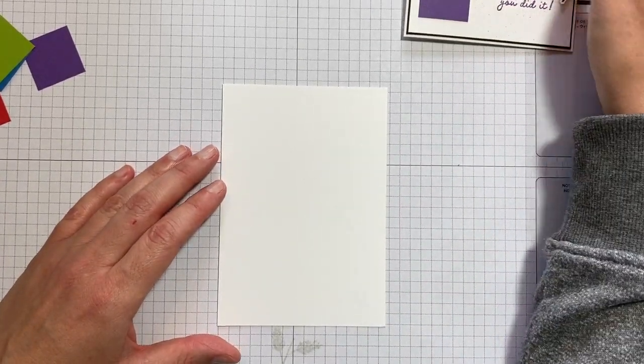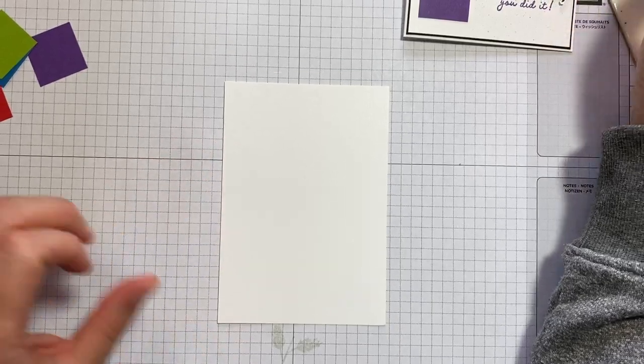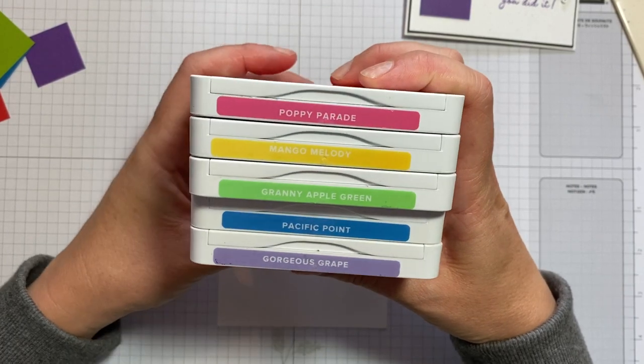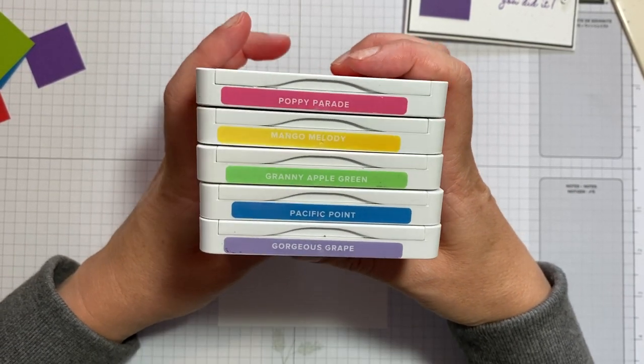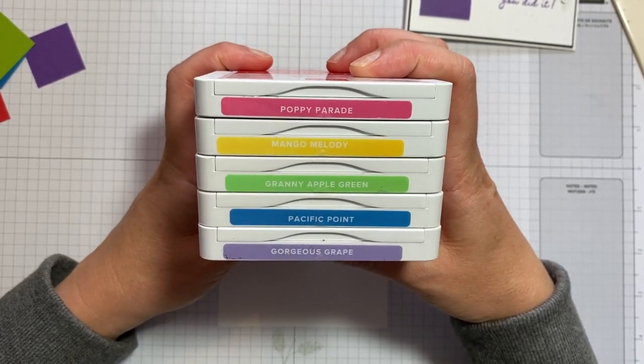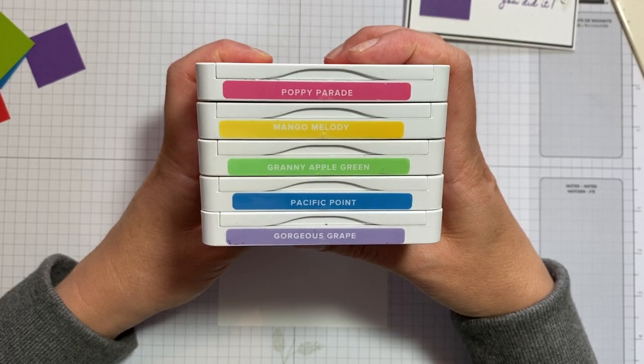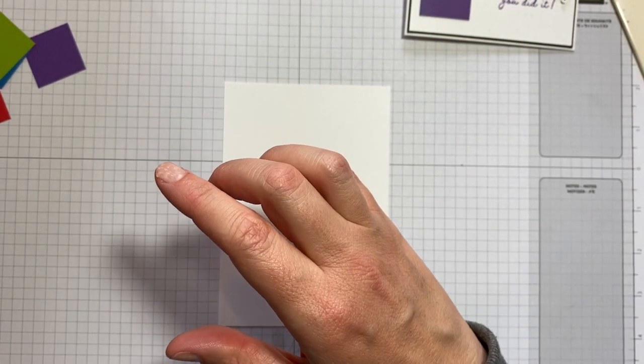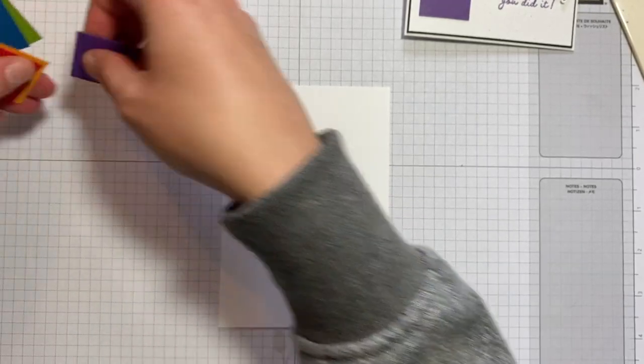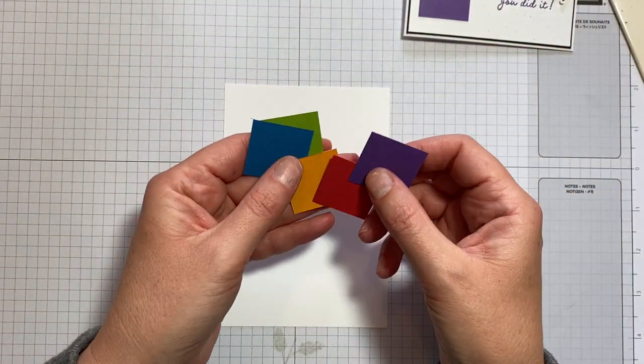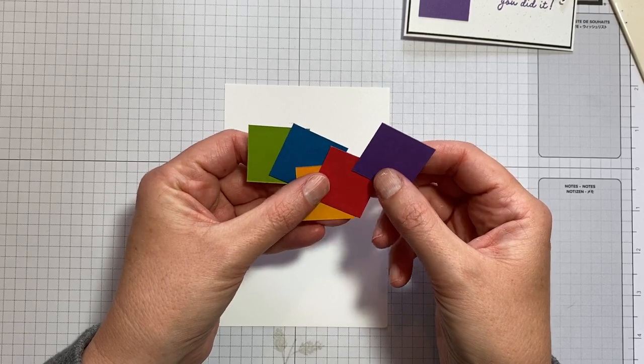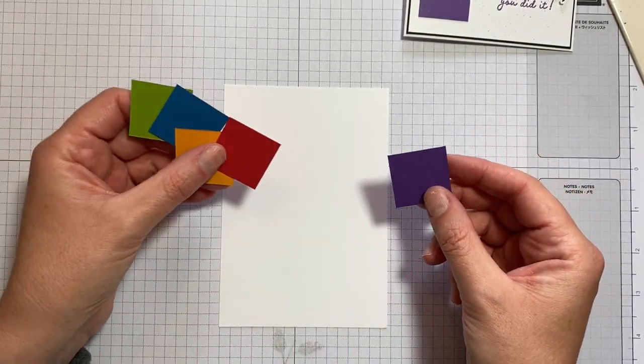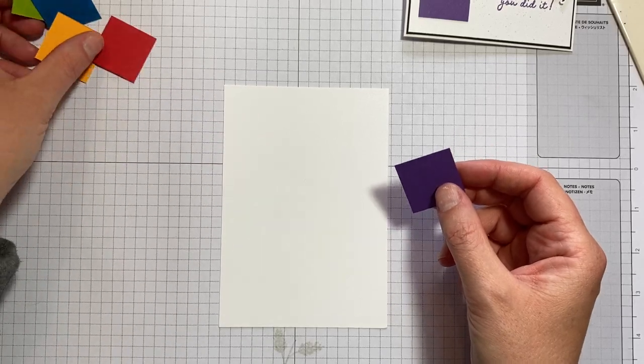I've got the sentiments in the five different colours and I'm using all from the Brights collection: Poppy Parade, Mango Melody, Granny Apple Green, Pacific Point and Gorgeous Grape. And I've got little squares of cardstock in the same colours and these are three centimetres by three centimetres.